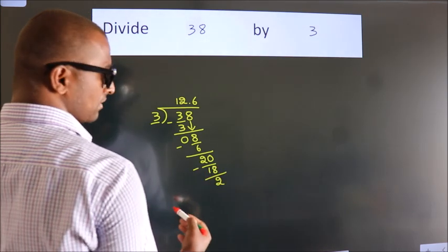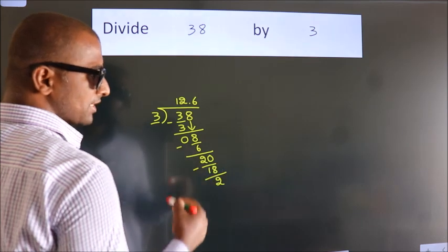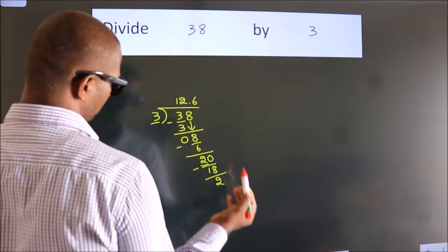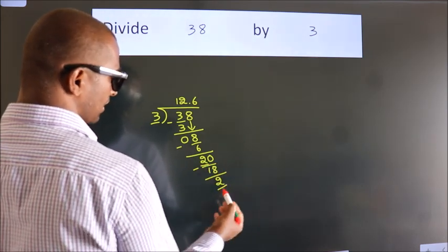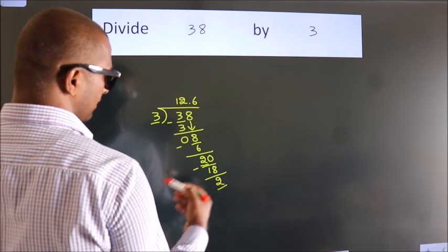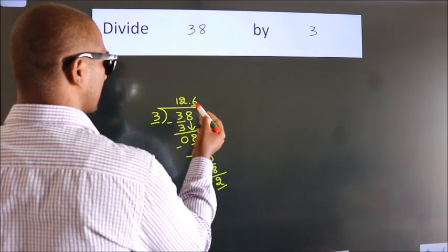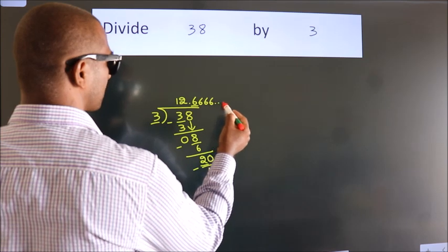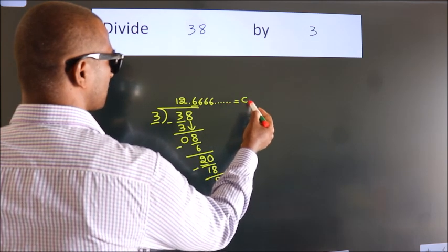We get 2. Now you observe. We had 2 here. And we got 2 again. That means this number keeps on repeating. So this is our quotient.